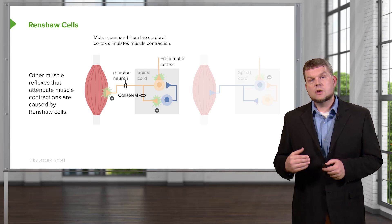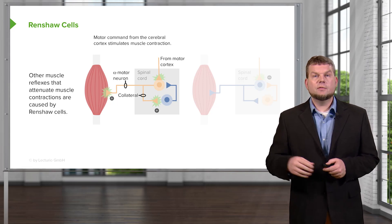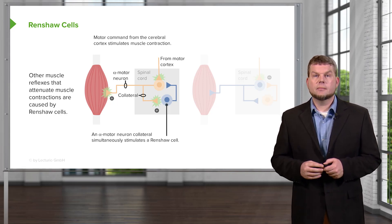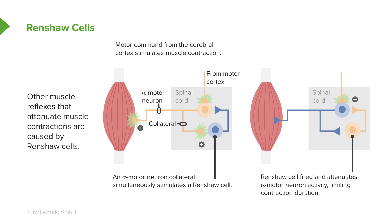That Renshaw cell that gets stimulated then inhibits further alpha motor unit contraction. So this is also a preventative mechanism and is helpful in reducing the amount of force output and limiting the contraction duration. It is thought that these Renshaw cells might be involved a little bit when a person goes through something like weight training.